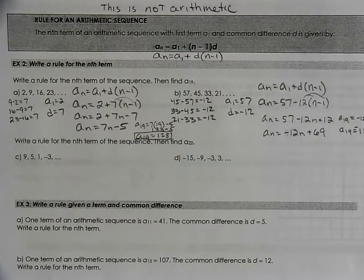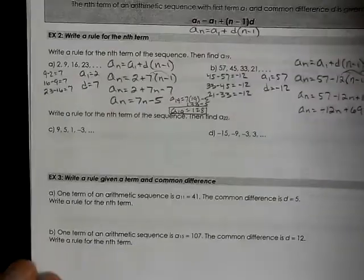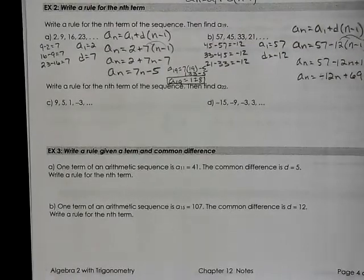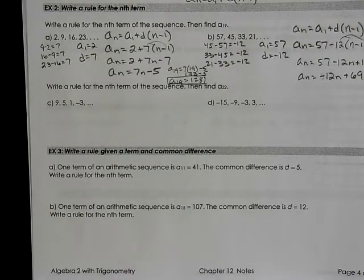This is the second day, chapter 12. We're continuing the notes. We are on example 2, letter C. Write a rule for the nth term of the sequence. Then we're going to find A22.